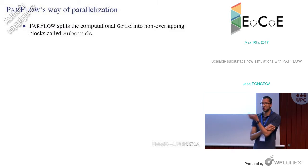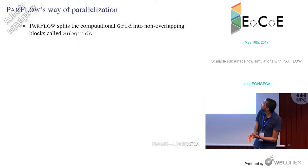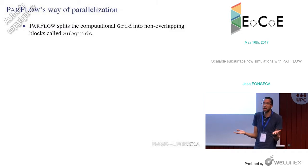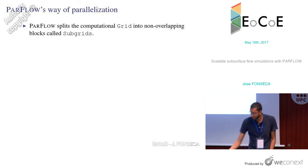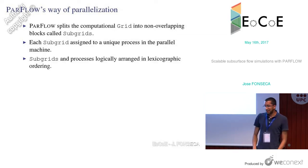ParFlow is a fairly mature code that started in the early nineties and has grown huge. If you want to touch such a fundamental part as the mesh, you need to understand the code, work with it, and identify exactly where to make surgical changes — without rewriting all of ParFlow, which would be out of scope. ParFlow splits the computational grid into non-overlapping blocks called subgrids, each assigned to a unique process, with subgrids and processes logically arranged in lexicographic order.